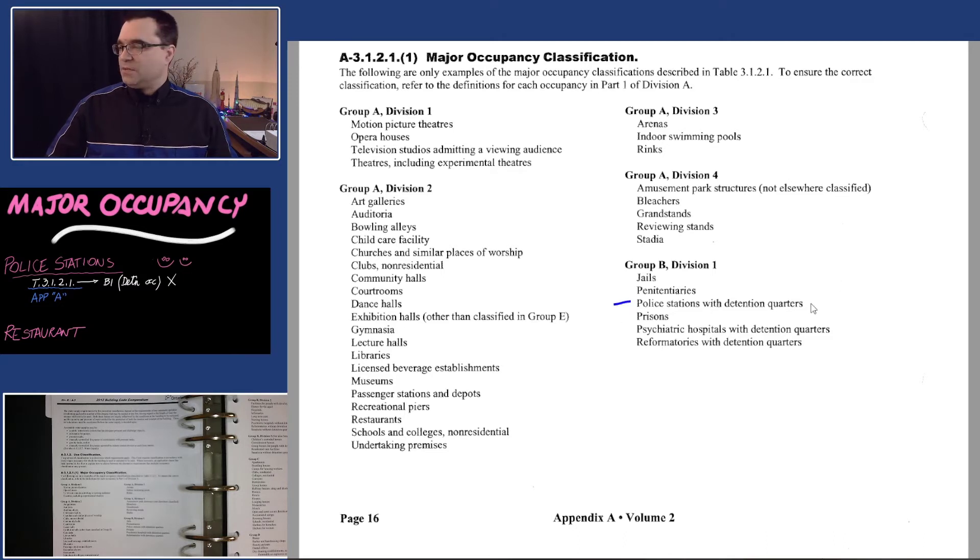I'm looking for it in alphabetical order. How about A3? No, I don't see anything. Let's try A4. No. How about B1? Look at this - police stations right there. But notice it says police stations with detention quarters, which makes sense because B1 was detention occupancies. Aha, you were right, I was right, I can use that table.